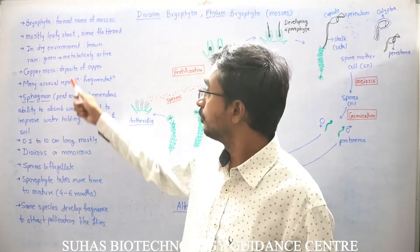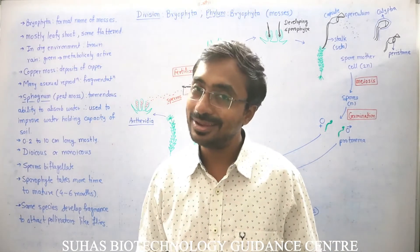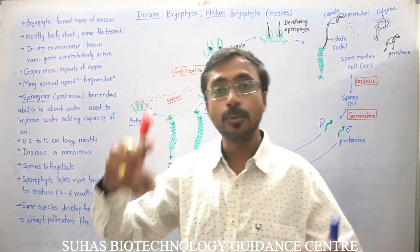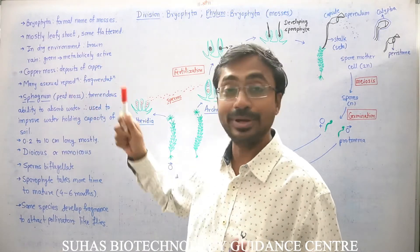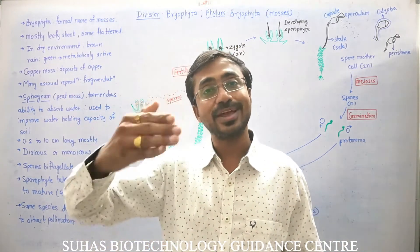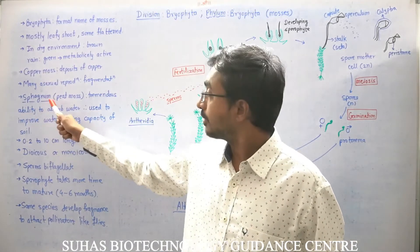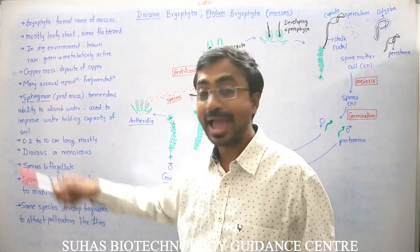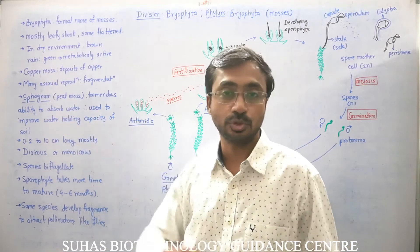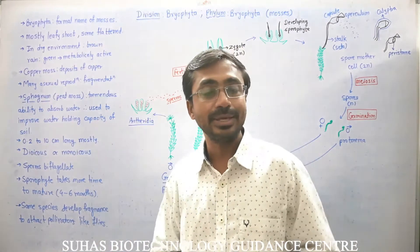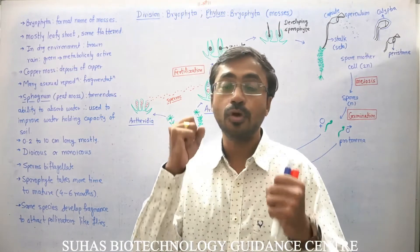Copper moss is a specialized moss found near deposits of copper — if copper moss is growing in an area, it indicates copper deposits under the soil. Many mosses show asexual reproduction, most through fragmentation, where every fragment can grow into a new moss. Sphagnum is called peat moss and has very high water-holding capacity; it is used to improve the water-holding capacity of soil.